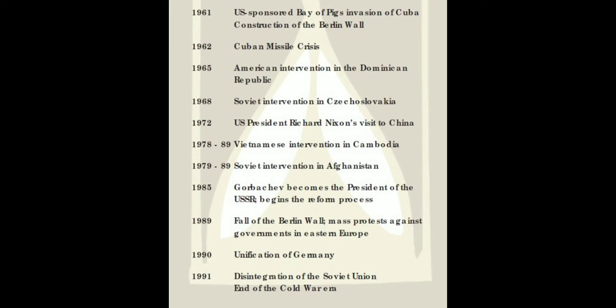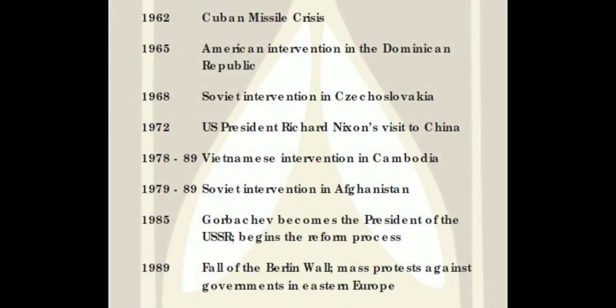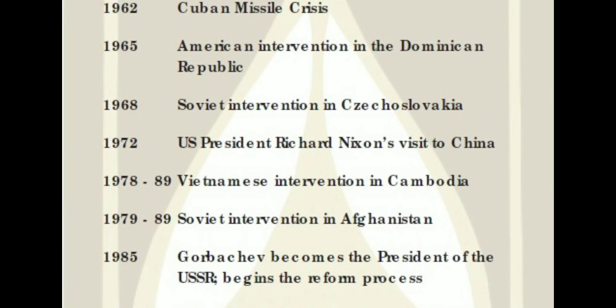In 1962, we studied the Cuba Missile Crisis. Then in 1965, there was American intervention in the Dominican Republic, and in 1968, Soviet intervention in Czechoslovakia. These are some of the areas and countries where both superpowers intervened — to increase their ideology and influence — the US in the Dominican Republic and the Soviet Union in Czechoslovakia.